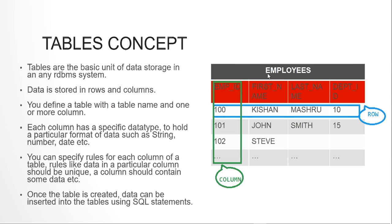You can define a table with any name — the maximum allowed characters in Oracle is 30. Each column is given a particular name and a particular data type. For example, employee ID stores numbers so its data type is NUMBER; first name and last name are VARCHAR; department ID is also NUMBER.